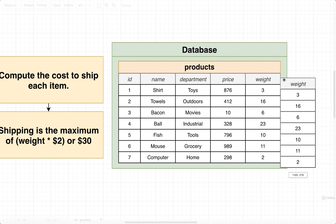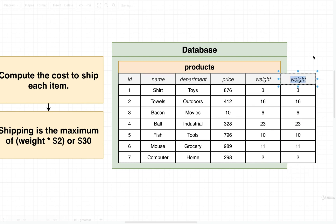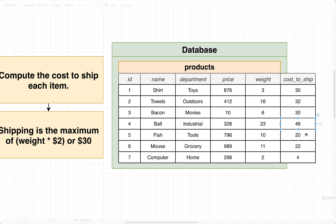So at a minimum it is $30; otherwise it might be weight times 2 if that is greater than $30. We take our weight column and run a calculation on it — call it 'cost to ship' — multiplying all values by $2. That gives us 6, 32, 12, 46, 20, 22, and 4. Then, if any of these values are less than $30, we take $30 instead. So 6 rounds up to $30, $32 stays at $32, and the rest round up to $30.